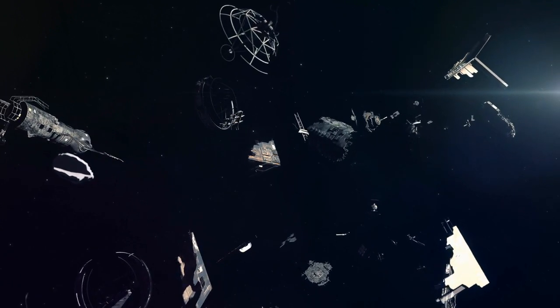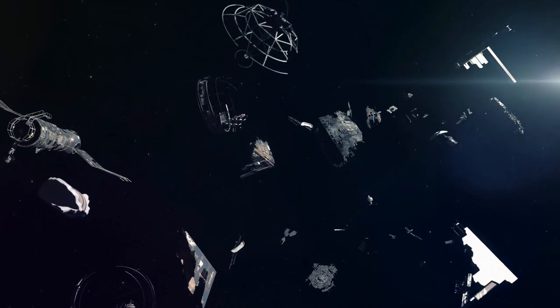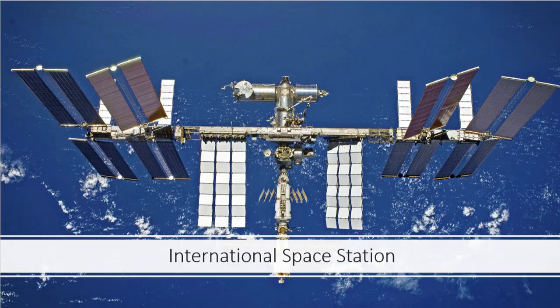The ISS travels around 27,600 km per hour at an altitude of 330 to 435 km. Fun fact, the crew in the ISS sees sunrise every 90 minutes. These non-geostationary satellites are used for applications such as for surveying and weather forecasting.